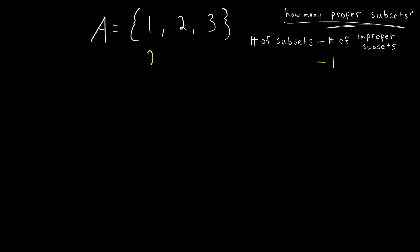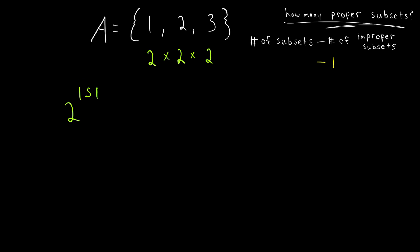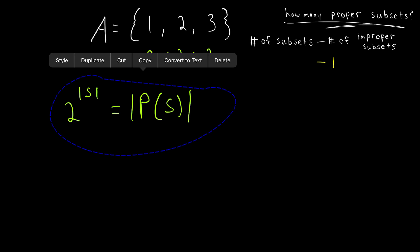So we've got two choices for the first element, and for each of those two choices we've got two choices for the next, and so on for larger sets. For any finite set S, the number of subsets of S is equal to two to the power of the cardinality of S — the number of elements that it has. If you're familiar with power sets, you'll notice that this is the cardinality of the power set of S, because the power set contains all of S's subsets. I'll leave a link in the description to my lesson on power sets as well.